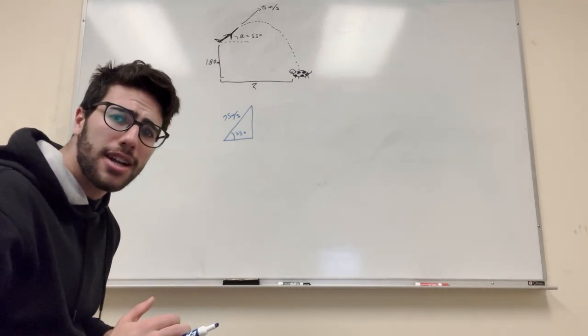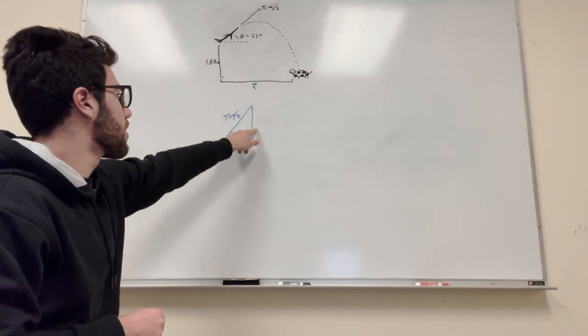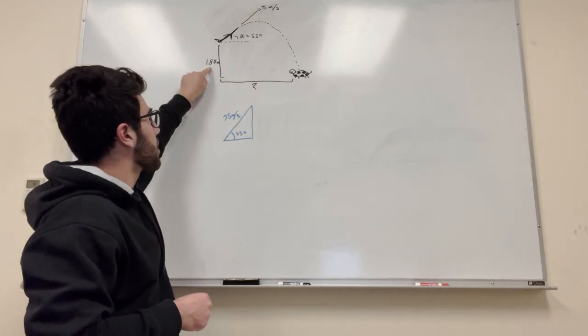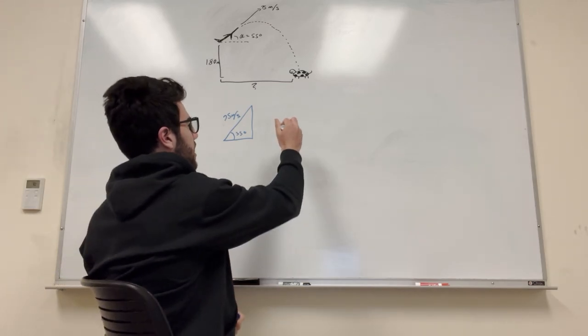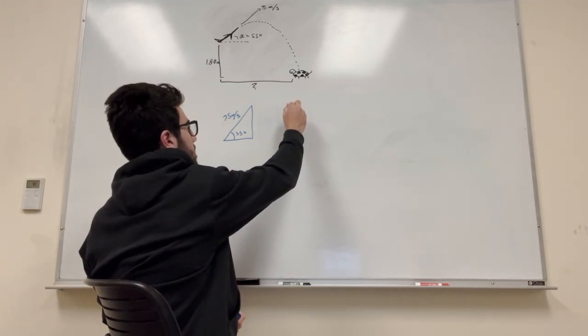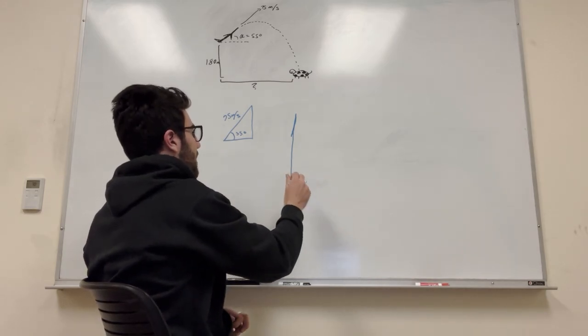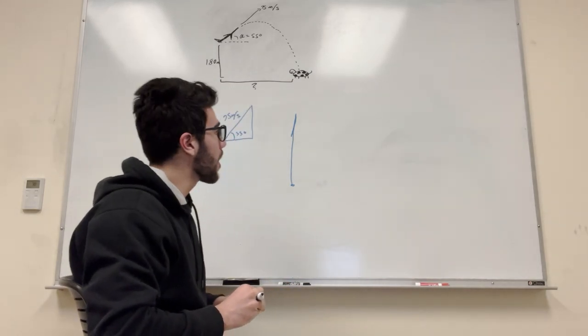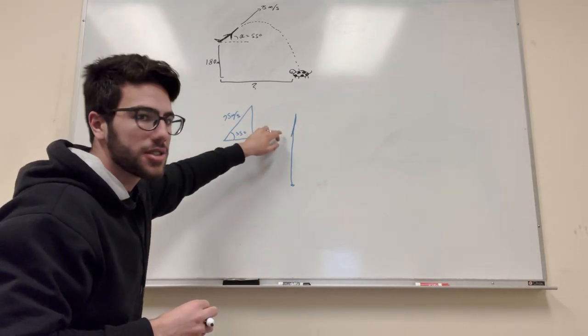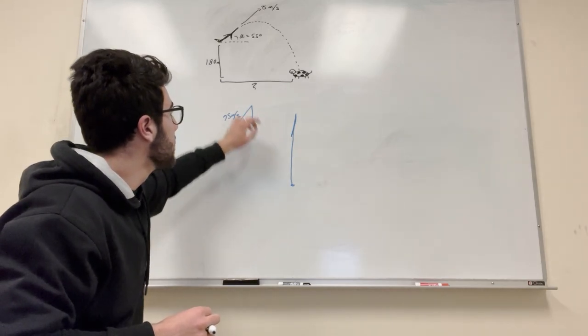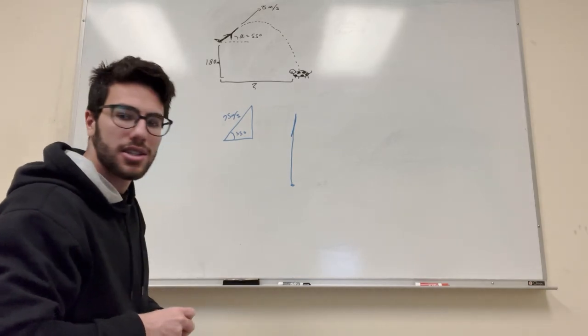And basically, the approach that I'm taking to solve this problem is we want to find out its vertical component, right? Because we know how far it is above the ground, and if we can know its vertical speed component, we can kind of find out, basically, it's going to go up, it's going to stop, and it's going to fall back down, and then it's going to fall 180 meters, and then it's going to hit the ground. And we want to find out how long it takes for that whole sequence to happen.